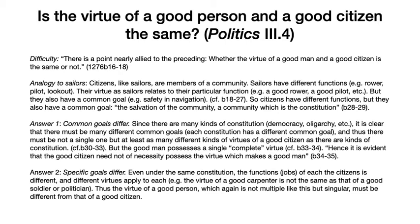He also says that specific goals differ — even under the same constitution, the function or jobs of each of the citizens is different and different virtues apply to each. So the virtue of a good carpenter or a good banker is not the same as that of a good soldier or a good politician. Thus again the virtue of a good person — which is not multiple like this but singular — must be different from that of a good citizen. For me to be a good citizen, I have to be a good teacher or a good soldier or a good politician. But that's very different from being a good person, which has to do with this singular all-encompassing virtue of justice.